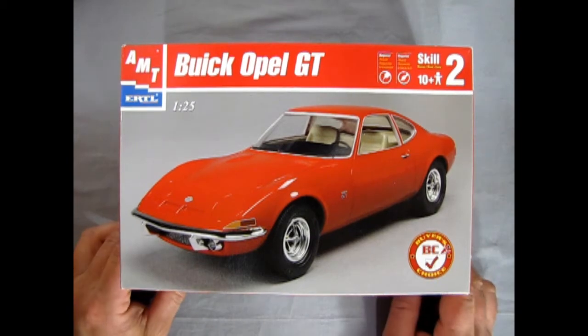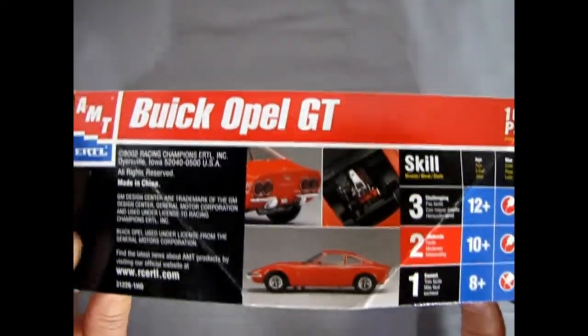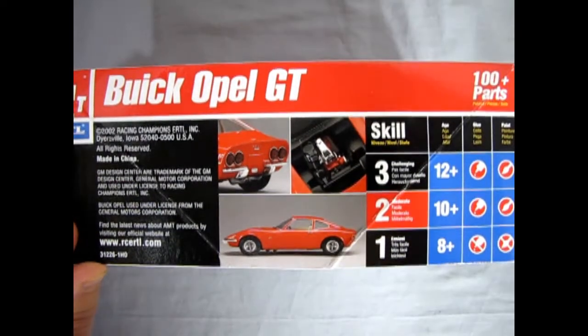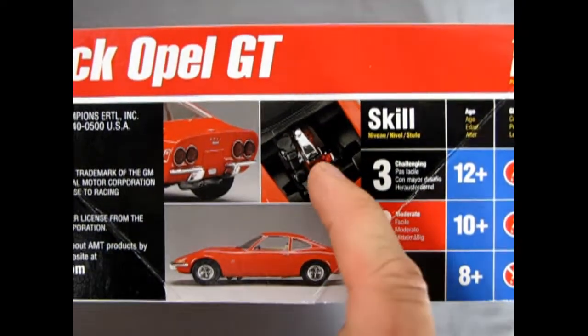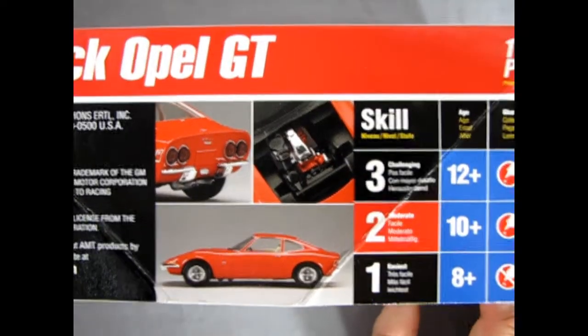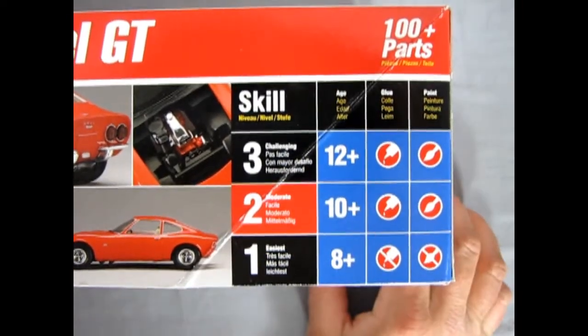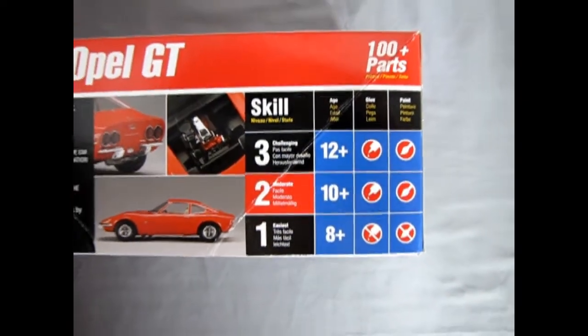Now this model kit came out in 2002 from Racing Champs. And you can see some very cool looking imagery here of the red model car on the front. There of course is the little Opel GT motor. This is a skill level 2 kit for ages 10 and up. Will require some glue and paint. 100 plus parts so quite detailed.